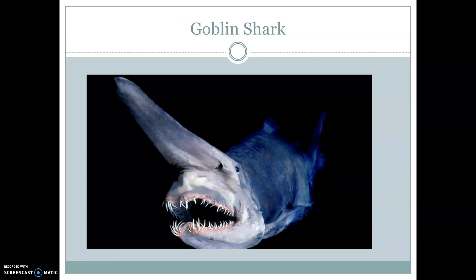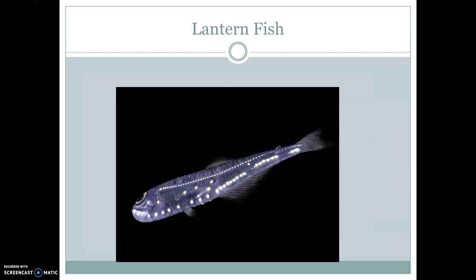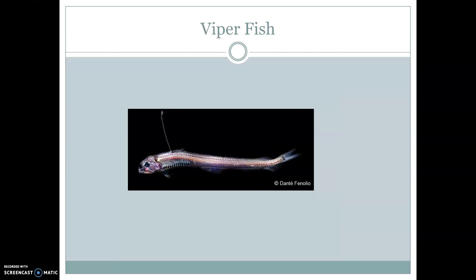Our goblin shark — again, looking at that mouth, very large to try to catch any prey in its path. Our lanternfish is definitely smaller, but those photophores are going to be seen in great presence here. The viperfish similarly shows those photophores, and even though it's such a small fish, we still see a pretty large ability to open its mouth with that hinged jaw.